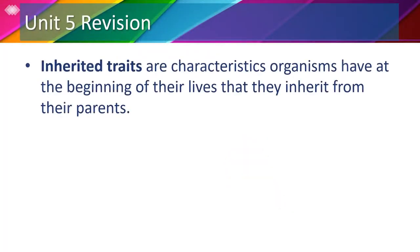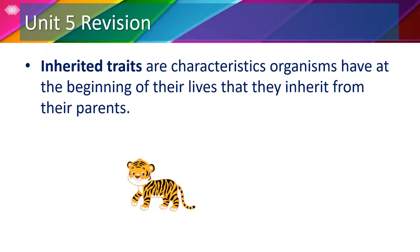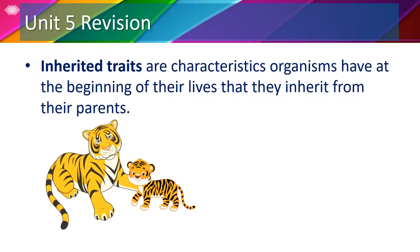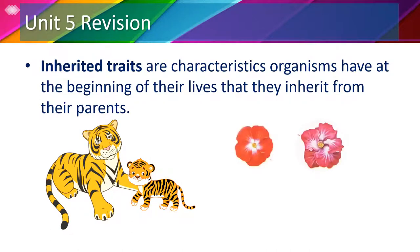Let's refresh our memory. Inherited traits are characteristics organisms have at the beginning of their lives that they inherit from their parents. For example, this baby tiger inherited a lot of traits from its parent, such as its fur color, stripes, and the number of legs it has. Also, these two parent flowers have this offspring, which has the same colors from both parents.